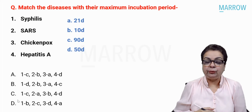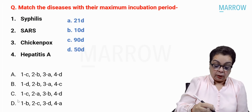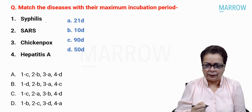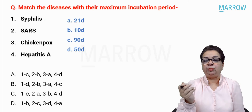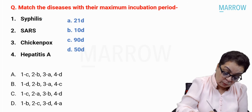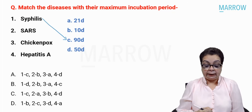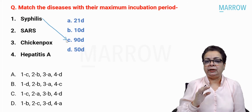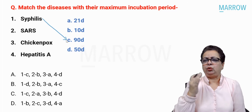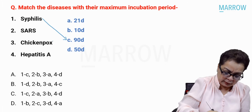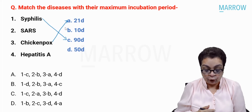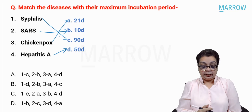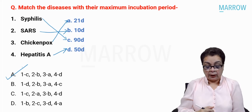Next: match the disease with their maximum incubation period — syphilis, SARS, chickenpox, hepatitis A. Syphilis incubation period ranges from 9 to 90 days — maximum is 90 days. Chickenpox is 7 to 21 days — maximum 21 days. Hepatitis A is 15 to 50 days — maximum 50 days. By elimination, SARS is 10 days. The answer is option A.